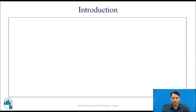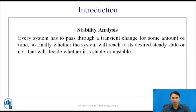So it is a very important factor for any system — it should get controlled and it should give stable output. That's why stability is important for any system. Stability analysis is important because every system has to pass through a transient change for some amount of time. Finally, whether the system will reach its desired steady state or not will decide whether it is stable or unstable.